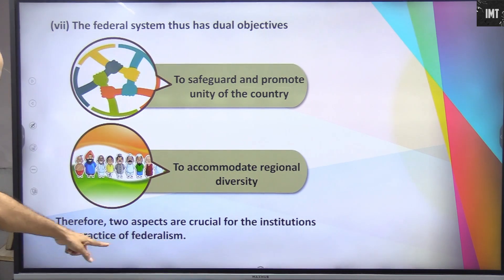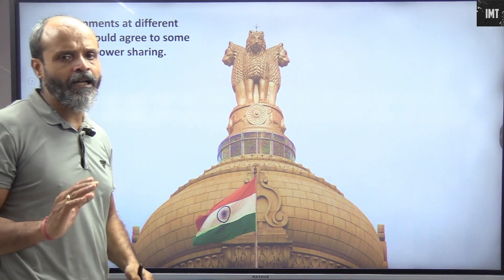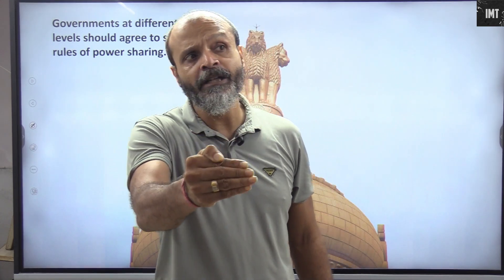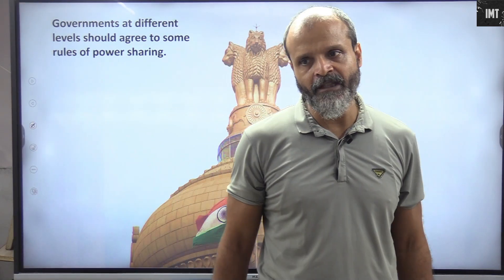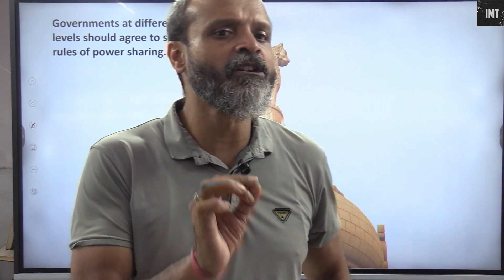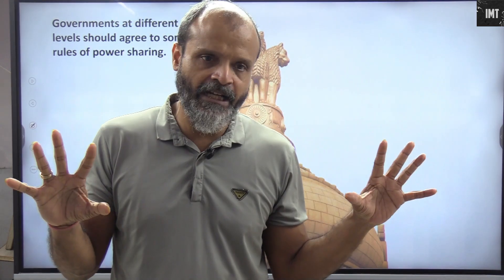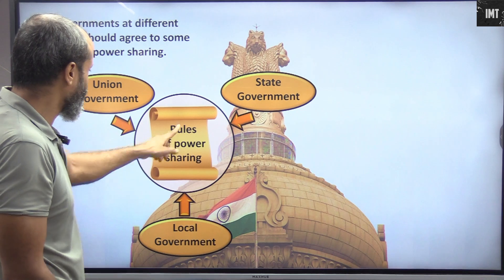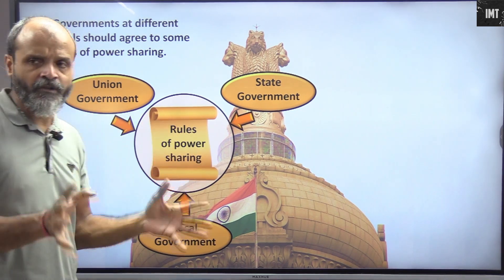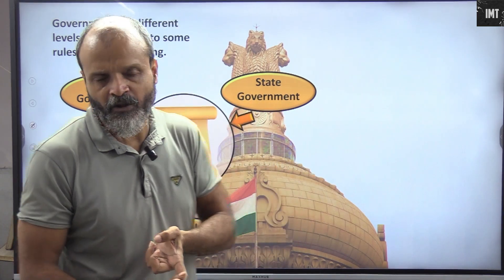Two aspects are crucial for the institutions and practice of federalism. First, governments at different levels — central, state, and local — must agree on rules of power sharing with mutual understanding. You cannot simply say 'you are taking this power' or 'you take this power' — that won't work. The constitution has already, with great deliberation and care, determined this division, so there should be no dispute about it.